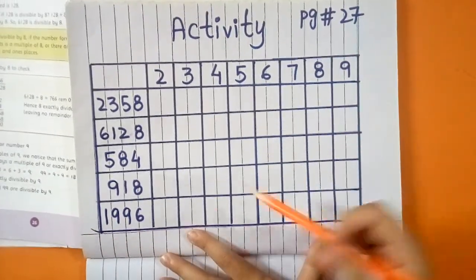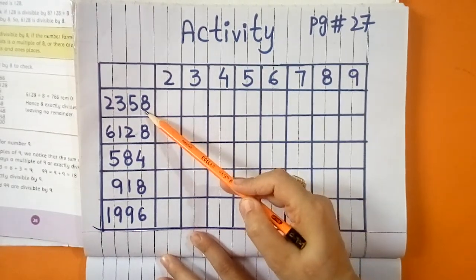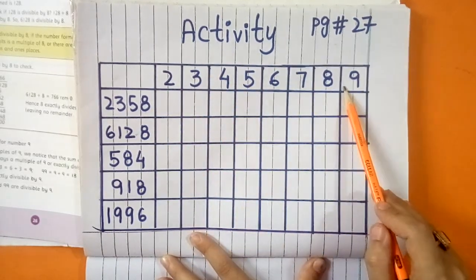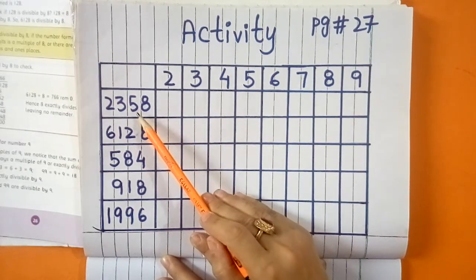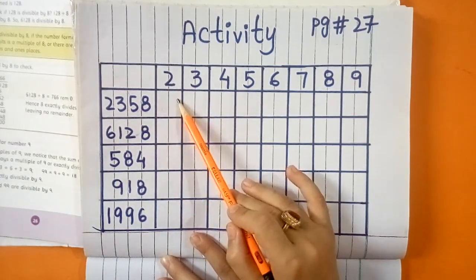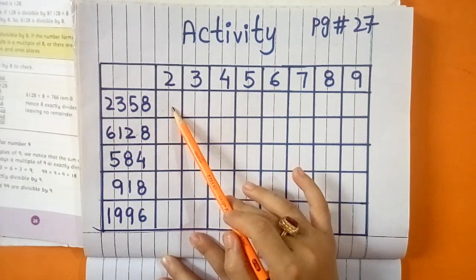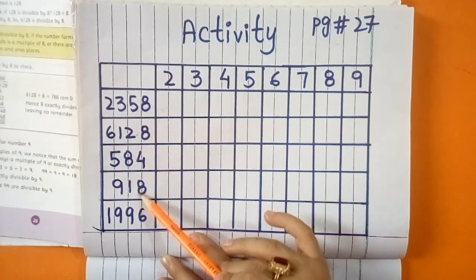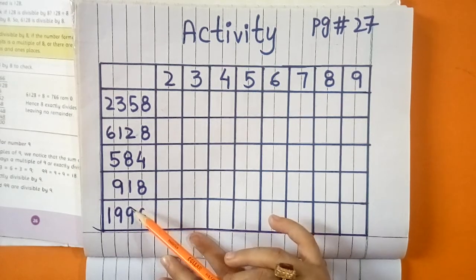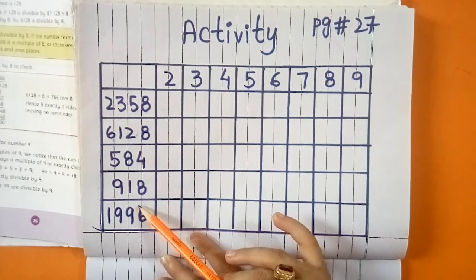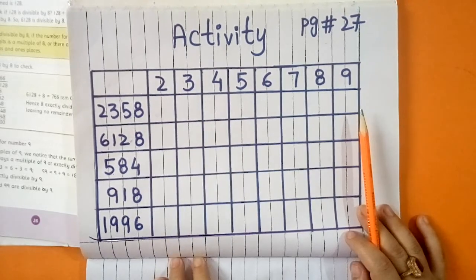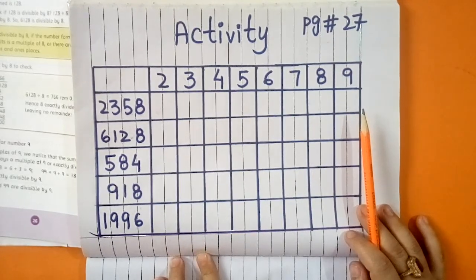Now this table is related to the rules we just covered. For divisibility by 2, you have to check every number and apply the divisibility rule, then mark a tick if the rule applies and a cross mark if the rule does not apply.